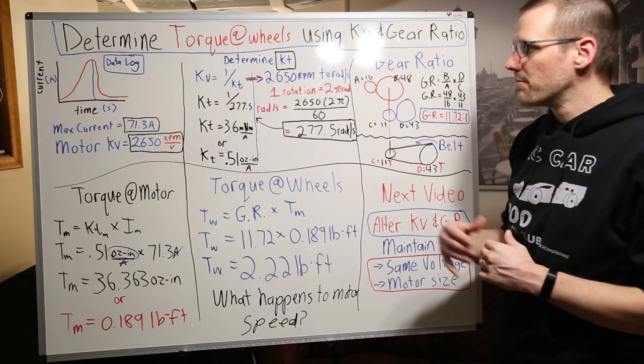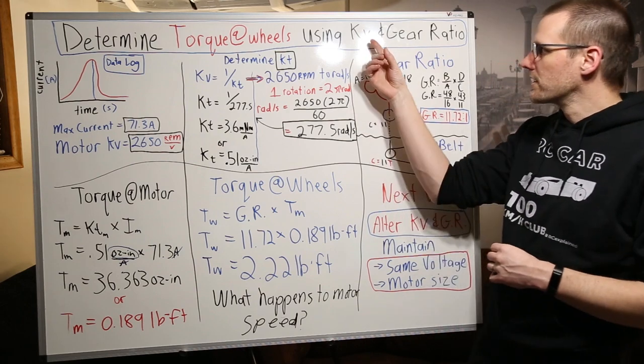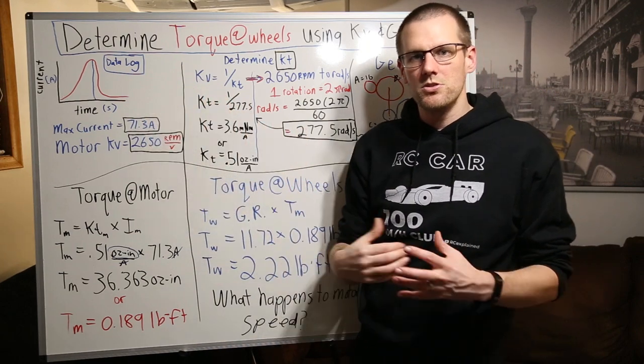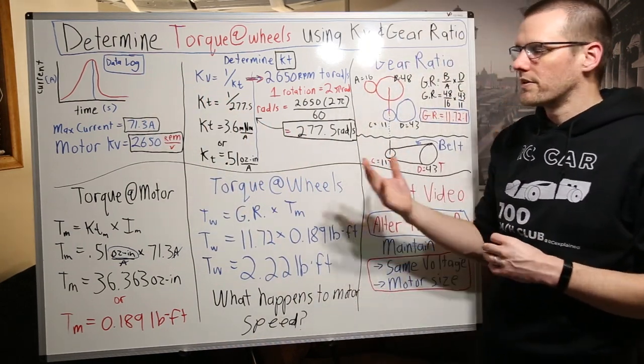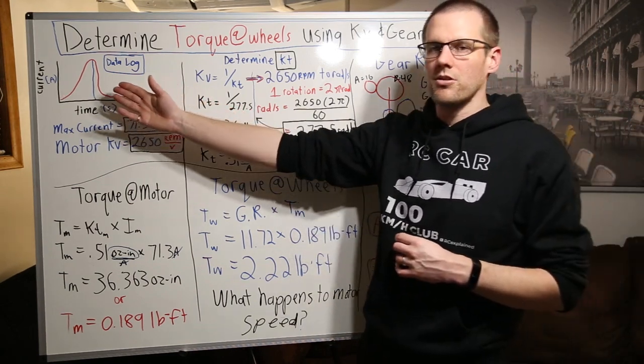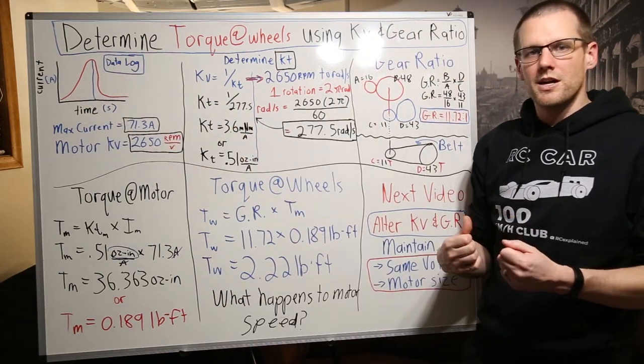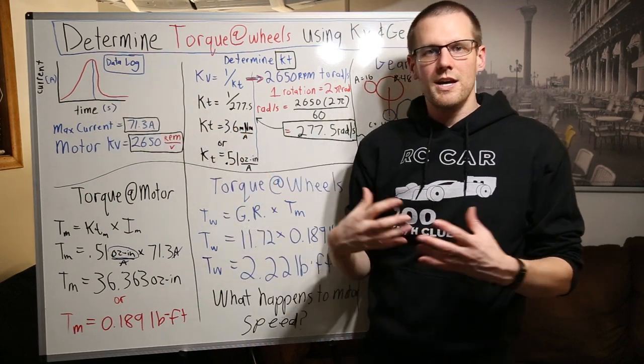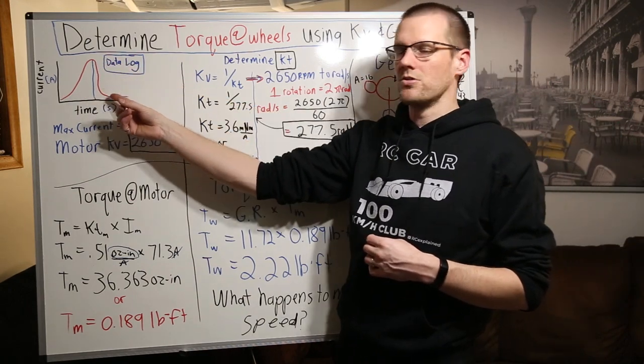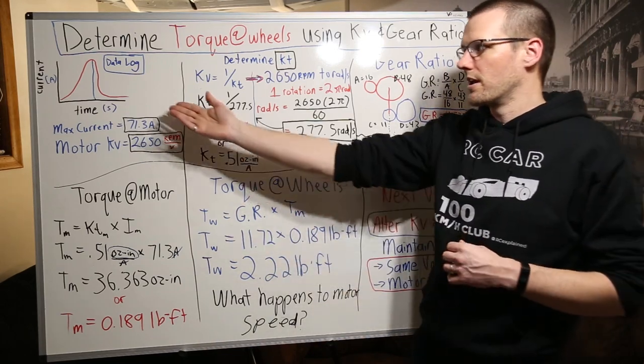So let's get started and talk about our data log. Now this is the first area where you're gonna have to get a little bit more information outside of the KV value as well as the gear ratio. This information comes from either your speed control or a standalone unit. What you want is a device that is able to measure that current output over time. This is what you see in our graph here. When you're racing around your radio control vehicle, you're accelerating and you draw a lot of current. And as you hit that peak speed, you may have to come up to a corner and slow down, which in case the current just drops off to almost nothing. And then if you hit the throttle again, you're gonna get more current, you're gonna get another spike.